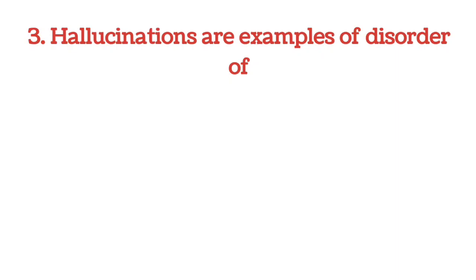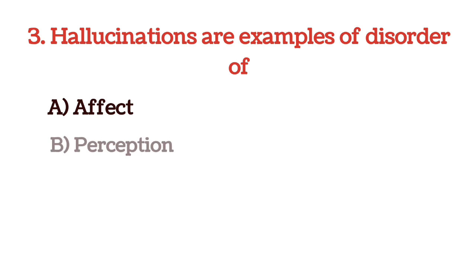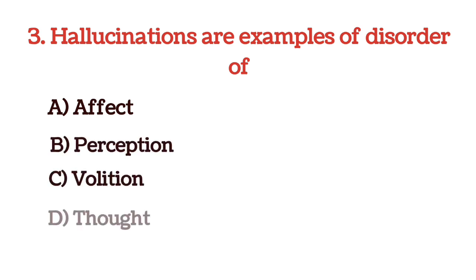The next question: hallucinations are an example of a disorder of — options are affect, perception, volition, and thought. The correct answer is option B, perception. Hallucinations are a disorder of perception.